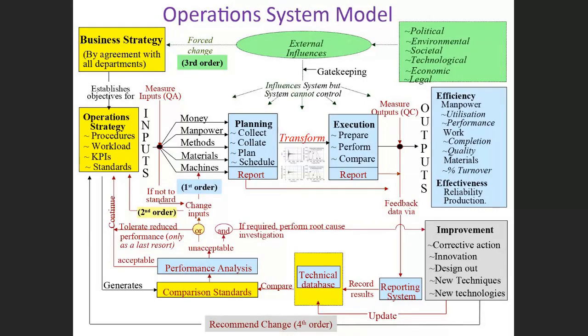Everything starts with the group-level strategy, and from that overall business strategy you extract objectives for your operations strategy. Within your operations strategy, you need to define your procedures, define the workload — how many people it will take to implement it. You also need to establish KPIs, or Key Performance Indicators: what measures are we going to put in place to ensure we're achieving the strategy and objectives stated at the beginning of our financial year or business cycle?